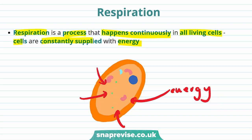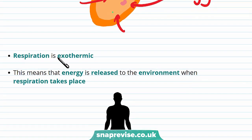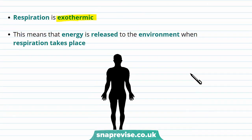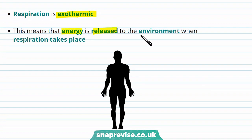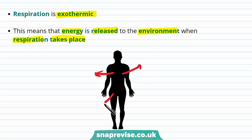We call respiration exothermic, and this is because energy is released to the environment when respiration takes place. As respiration takes place constantly, your body is also constantly transferring energy to the environment, mostly in the form of heat.